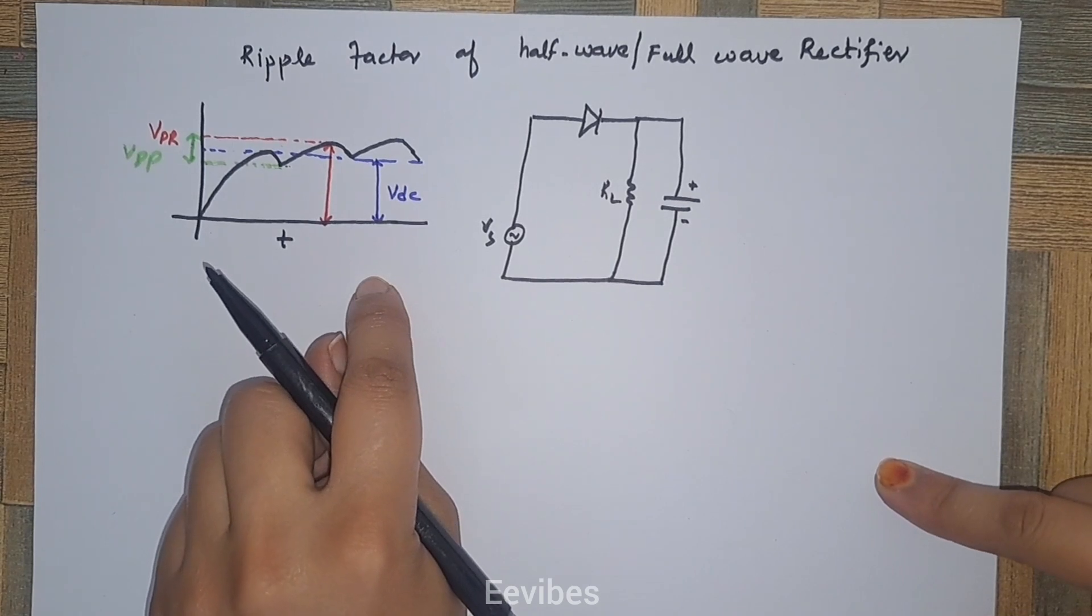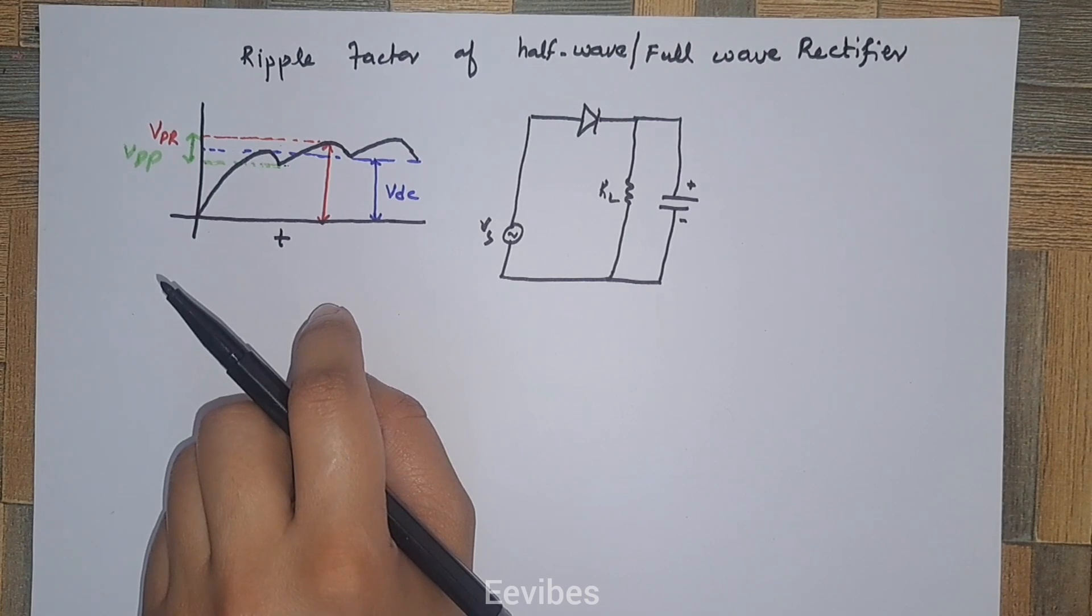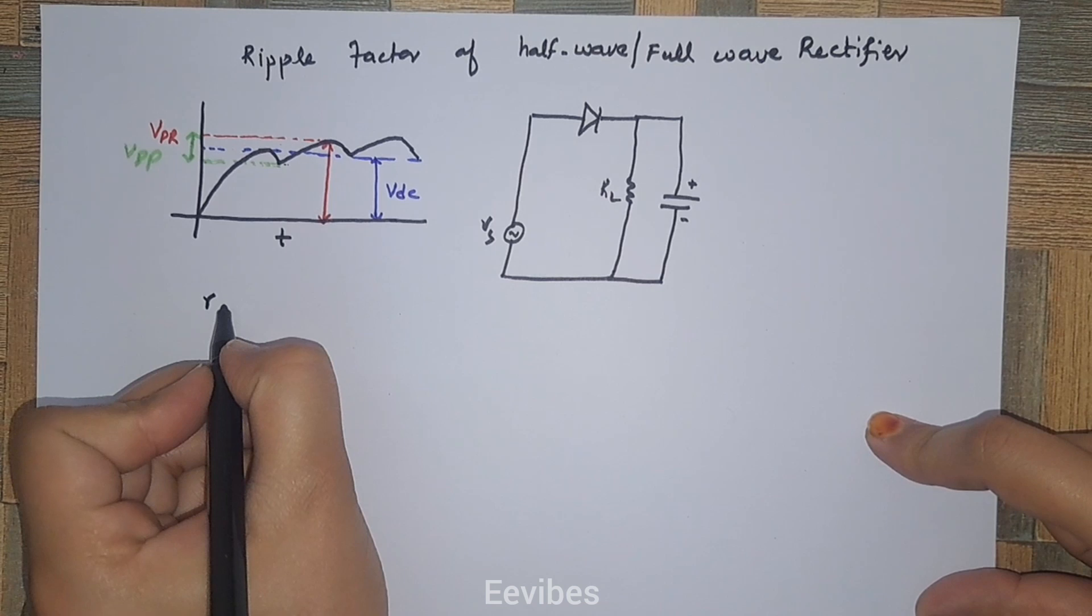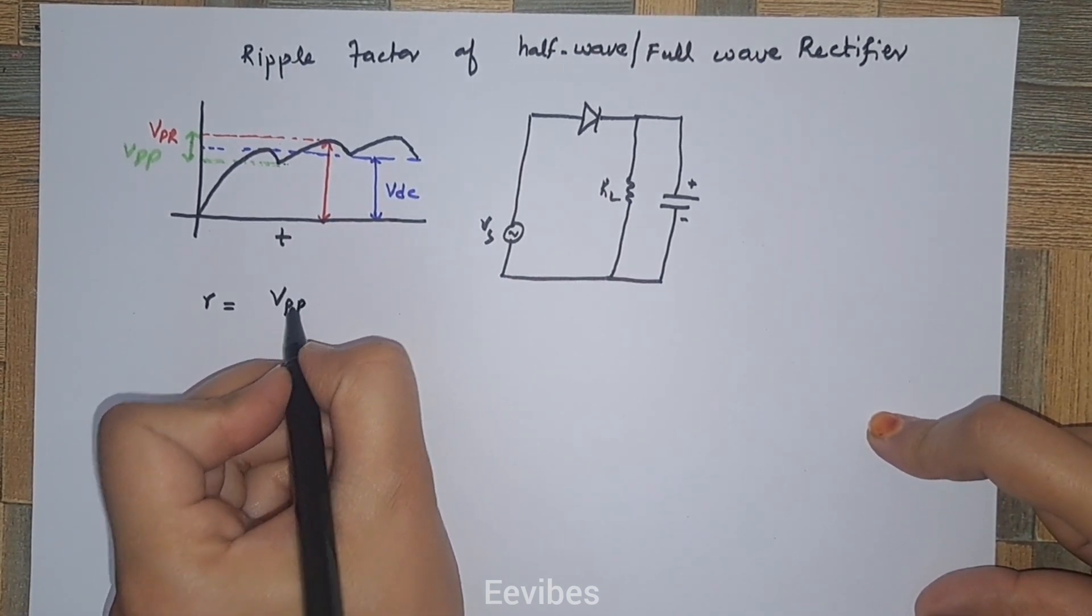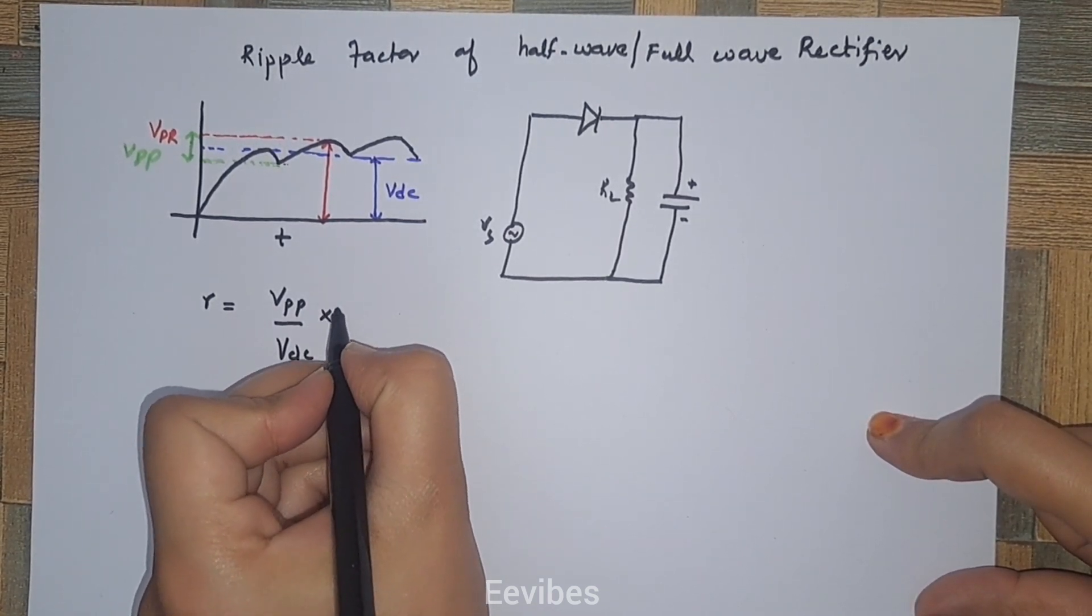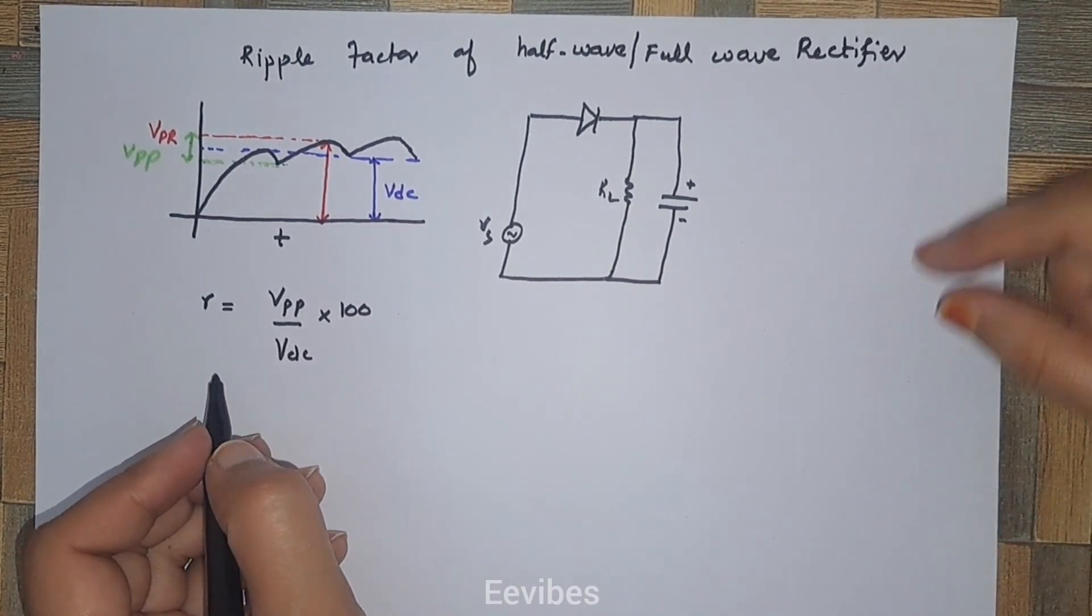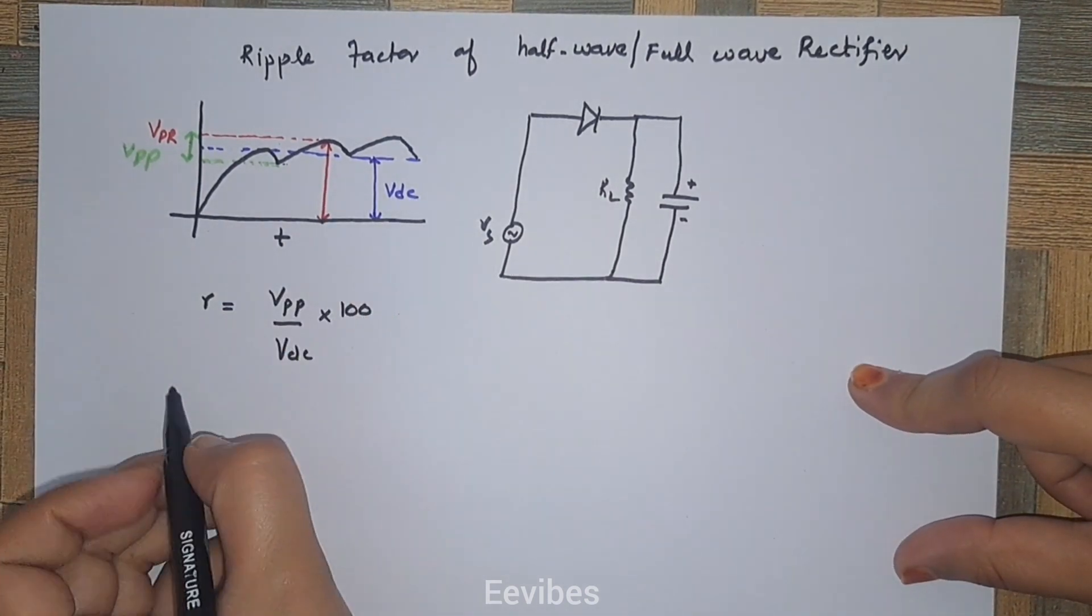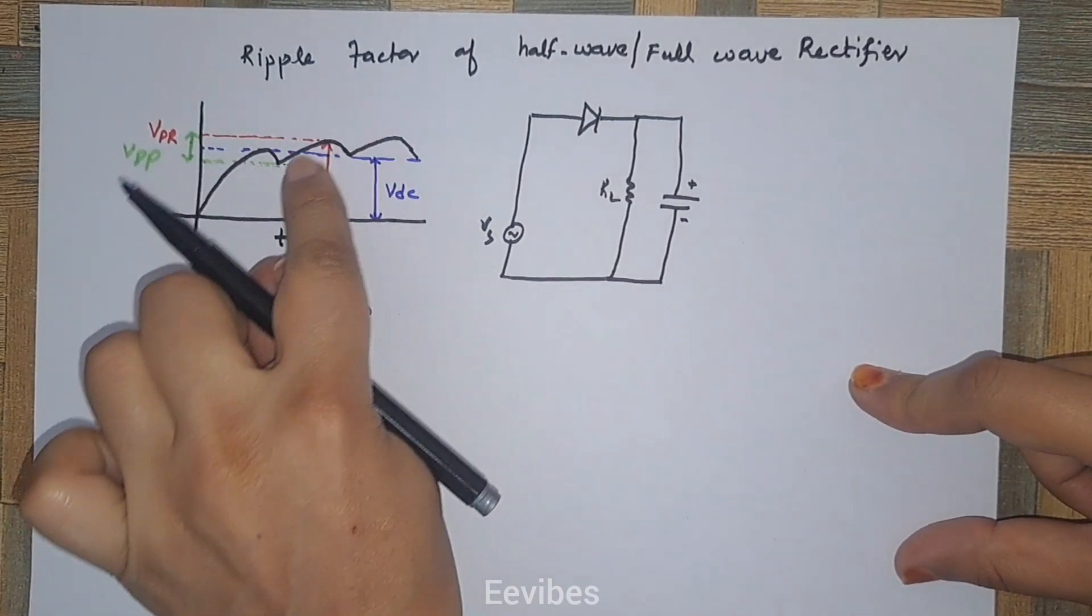VDC is the average value of the output voltage that you will measure across the DC voltmeter. The ripple factor in case of half-wave or full-wave rectifier is generally represented by R and is given as V peak-to-peak divided by VDC, represented in percentage, so you multiply it with 100.